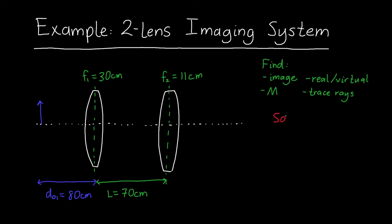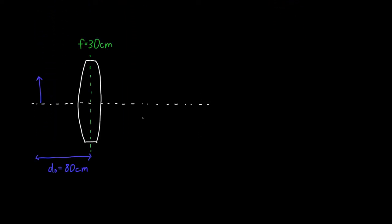So how do we solve this system? This is actually two separate problems. The first problem is imaging through lens one, and the second problem is imaging through lens two. We're going to break this up into two separate problems. So let's draw the first one. This contains all the information we need: our object distance, the lens we're imaging through, and we need to figure out where the image is located. We've completely ignored the second lens for the time being.